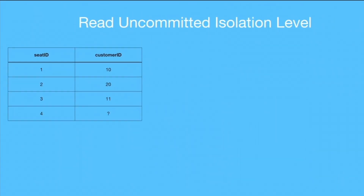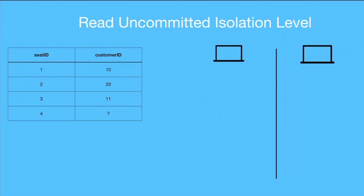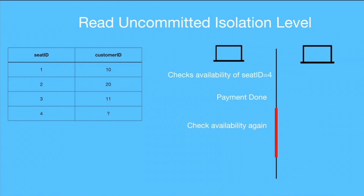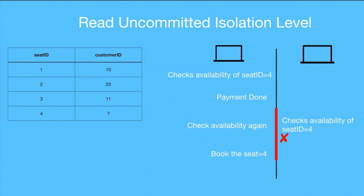Now let's see how the read uncommitted isolation level solves the booking problem. Both clients are trying to book seat 4. The first client checks availability, finds it available, proceeds to payment, initiates a transaction, and books the seat. If any other client tries to read the availability of seat 4 while that transaction is in progress and the booking has been inserted but not committed, they will see that the seat is not available. So they will not proceed to the payment flow, saving the user from a bad experience.